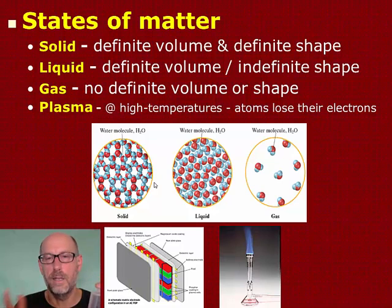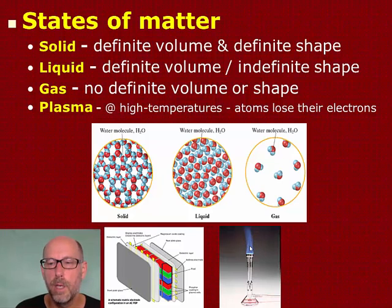The last state of matter that you should know about a little bit is plasma. And plasma is interesting because it's a situation in which at high temperatures atoms lose their electrons. So if you look at this Bunsen burner down in the bottom right corner, what's happened is usually we have a nucleus with electrons in shells.